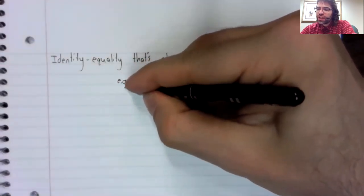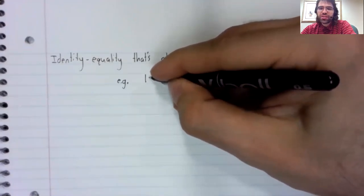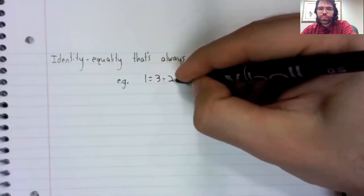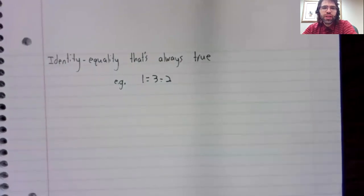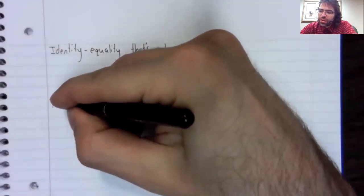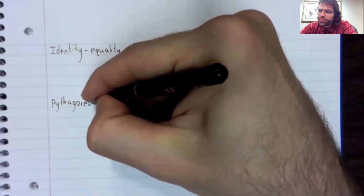So an example of a not very interesting identity: one equals three minus two. That is always true. It's not something that you would solve in spite of having an equal sign here. It's just a statement of fact.